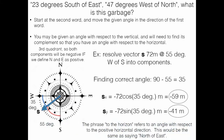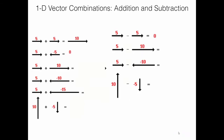You might also see the phrase 'to the horizon' instead of bearing language — that means we start in the positive x direction (east) and go north. So '20 degrees to the horizon' means 20 degrees north of east.